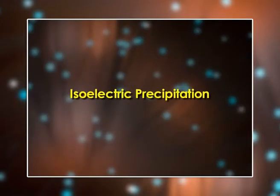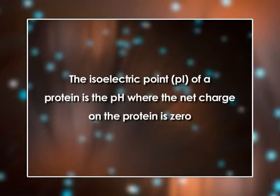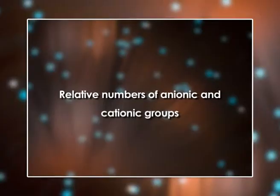Next, isoelectric precipitation: the isoelectric point (pI) of a protein is the pH where the net charge on the protein is zero. Proteins tend to aggregate and precipitate at their isoelectric point because there is no electrostatic repulsion keeping them apart. Proteins have different isoelectric points because of their different amino acid sequences — that is, the relative numbers of anionic and cationic groups — and thus they can be separated by adjusting the pH. When the pH is adjusted to the isoelectric point of a particular protein, it precipitates, leaving the other proteins in solution.